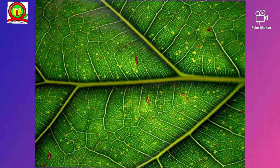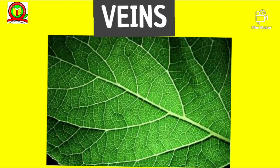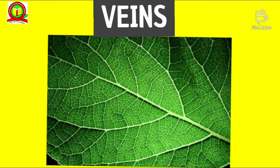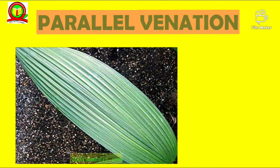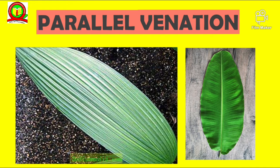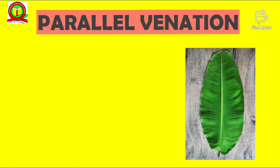The veins act as a pipeline which carries the water, minerals and food up and down the leaf. One can tell what kind of root a plant has by just looking at the leaf. The veins in the plant with fibrous roots are parallel to each other on both sides of the midrib, like in the banana leaf. The arrangement of veins on a leaf is called the leaf venation. When the veins on either side of the midrib are parallel to each other, we call it parallel venation, as seen in the banana leaf.